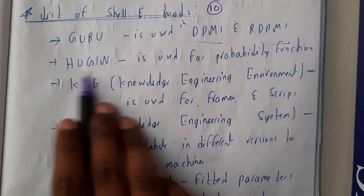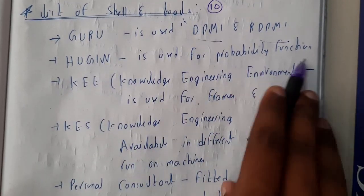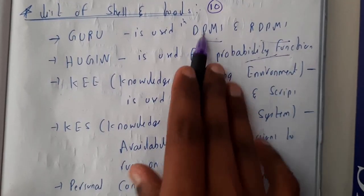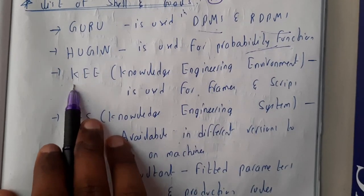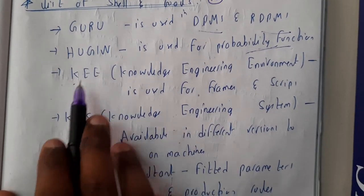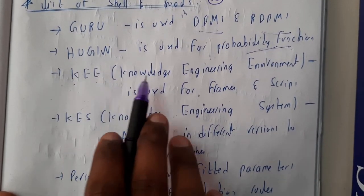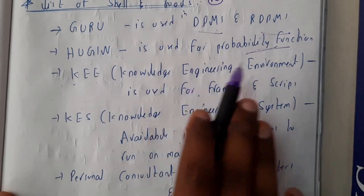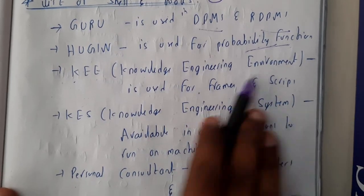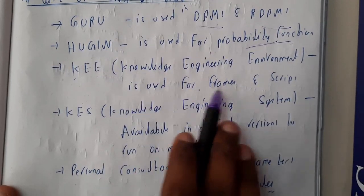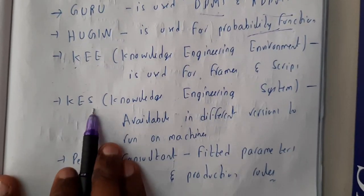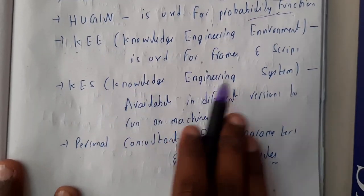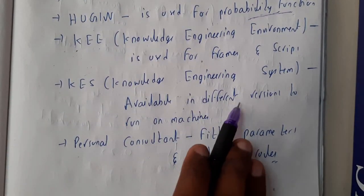HUGIN is used for probability functions, so remember at least these two. We are also having KEE — K-E-E — which stands for Knowledge Engineering Environment, used for frame and scripting. KES, that is Knowledge Engineering System.